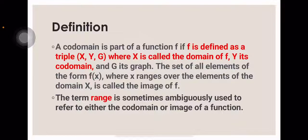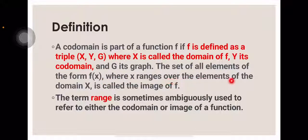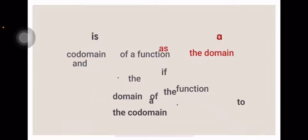The definition of a co-domain is a part of a function F. If F is defined as a triple (X, Y, G), where X is called the domain of F, Y is the co-domain, and G is the graph. The set of all elements of the form F(x), where X ranges over the elements of the domain, is called the image of F. The term range is sometimes ambiguous, used to refer to either the co-domain or the image of the function.